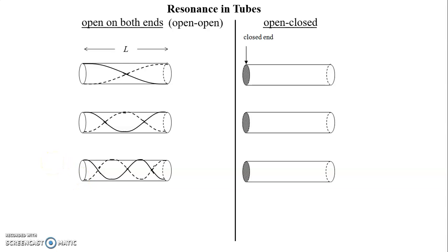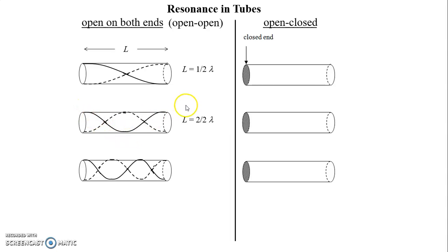Now let's talk about how many cycles fit into each tube. For the first tube, this is half a cycle — it goes from crest down to trough, which is not a full cycle. For the second, it's a full cycle: crest, trough, back to crest — or two half-wavelengths. For the third, it's three half-wavelengths: crest, trough, crest, trough. Every time we go to another standing wave, another resonance, we add another half a wavelength — very similar to what we saw for standing waves on a string.